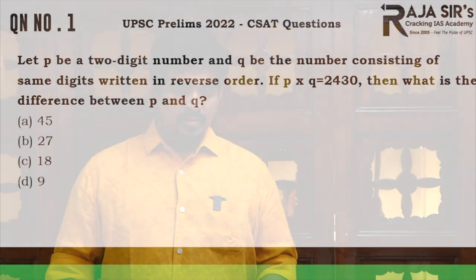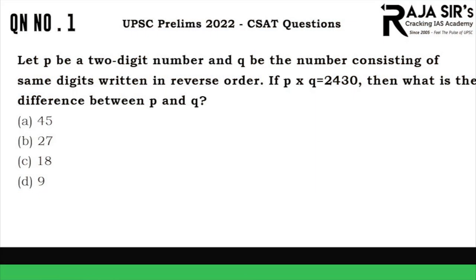Let P be a two-digit number, and Q be the number consisting of the same digits written in the reverse order. If P into Q is equal to 2430, then what is the difference between P and Q?